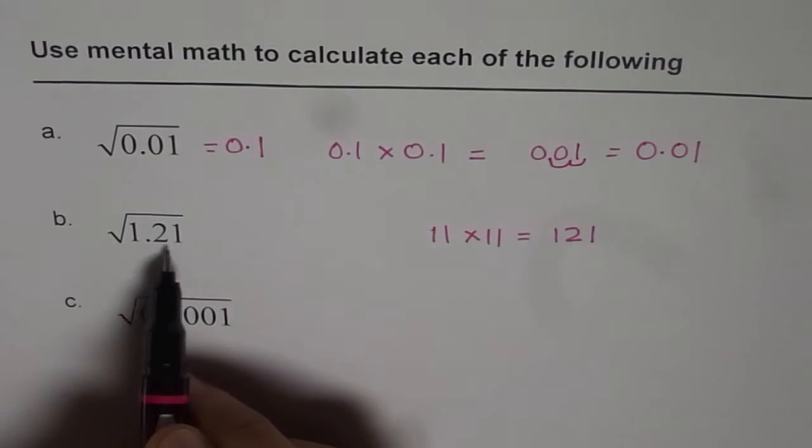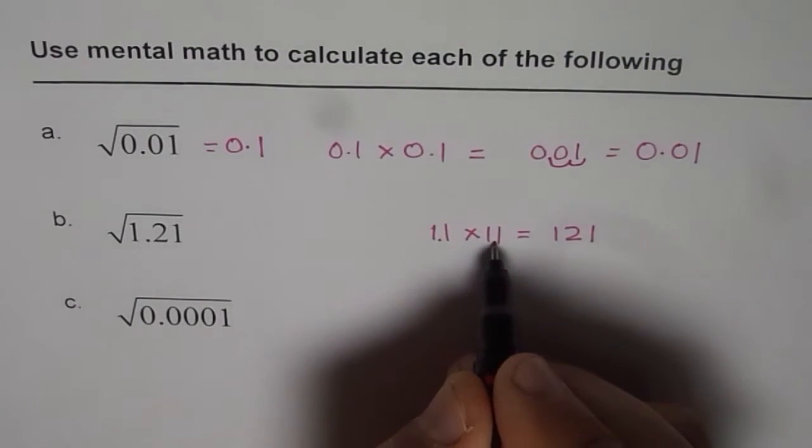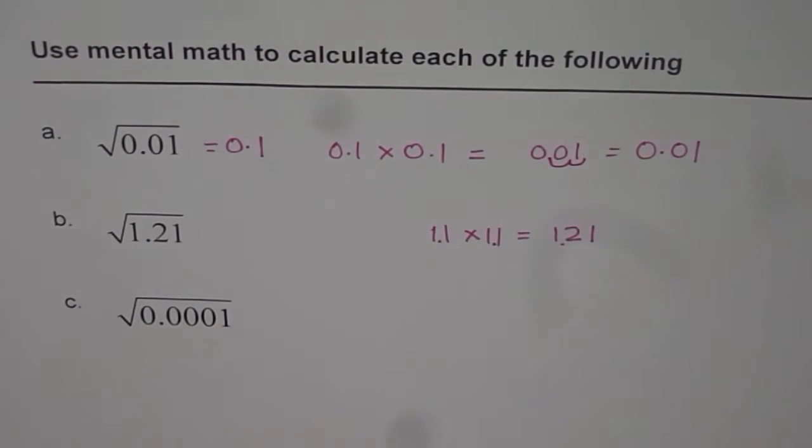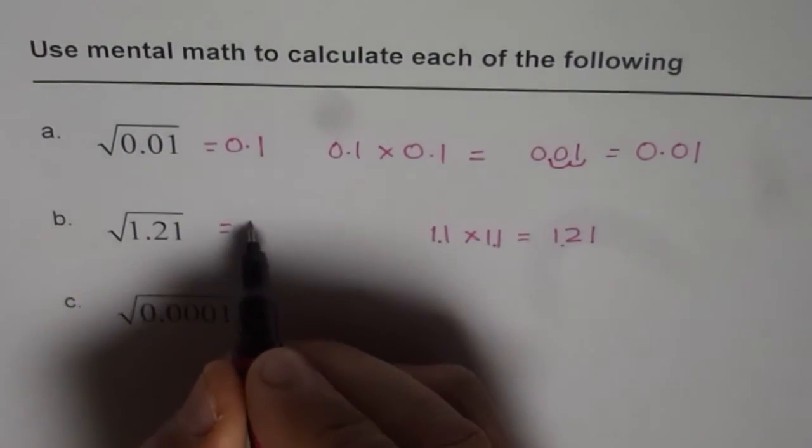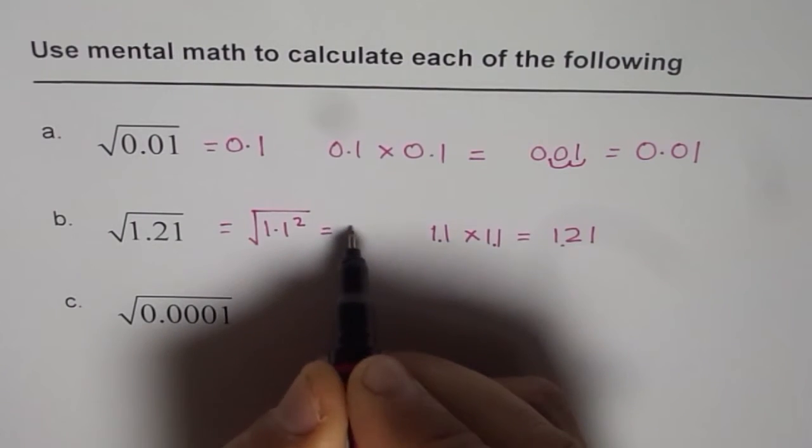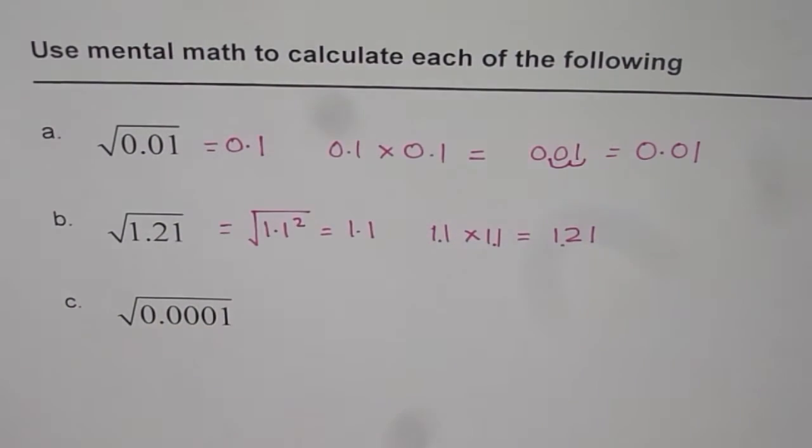But we have two decimal places here. That means there should be one decimal place here to make it 1.21. So we could write this as 1.1 squared, which is equal to 1.1. So that becomes our answer.